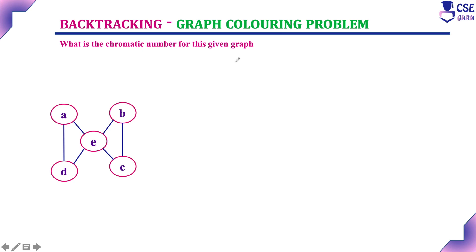For this given graph, what is the chromatic number? The chromatic number is the minimum number of colors required to color this given graph such that adjacent vertices should not be assigned the same color. If I assign color number 1 to A, the same color should not be assigned to D and E, but color number 1 can be assigned to B also because A and B are not adjacent vertices. A and D are adjacent, so they should not share a color. Similarly, B and C should not be assigned the same color. E should not share any color with A, B, C or D since all four vertices are adjacent to E.